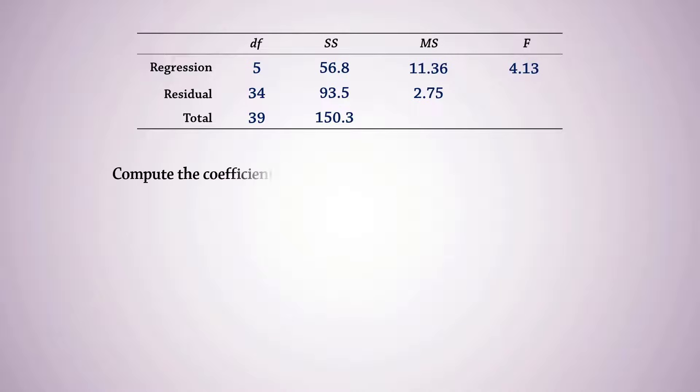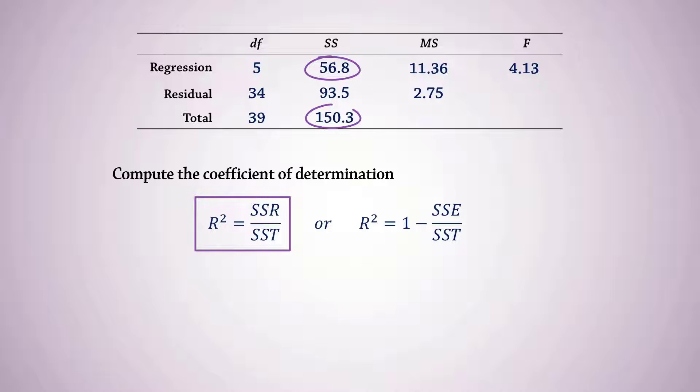To compute the coefficient of determination, we will use SSR over SST. That is, 56.8 divided by 150.3, and that gives 0.3779.